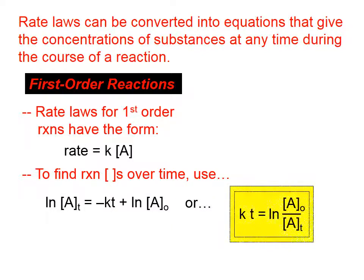Or an equivalent expression, which I prefer, which is shown on the right in yellow: k times t equals the natural log of concentration [A]₀ divided by concentration [A]ₜ. The naught here indicates the initial concentration, the concentration at time zero. The [A]ₜ is the concentration at some later time t, could be 35 seconds from now, could be 118 seconds from now.